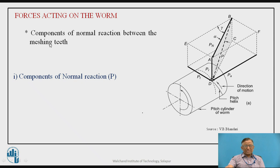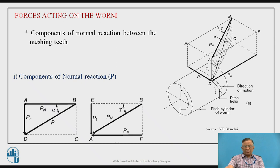First, we consider the component of normal reaction between meshing teeth, similar to helical gear analysis. Using plane ABCD (the normal plane), the normal force P is resolved: PN = P cos α and PR = P sin α, where α is the pressure angle.